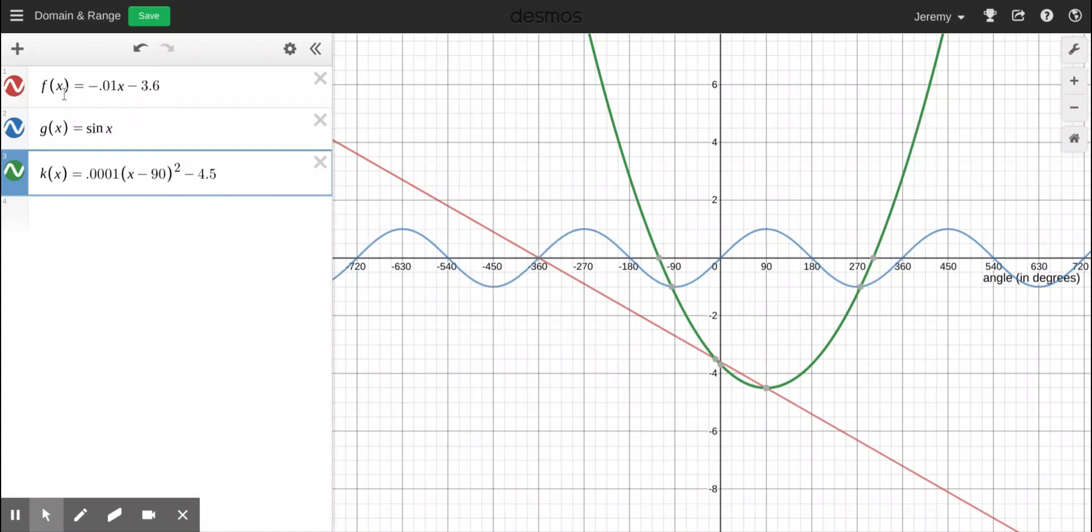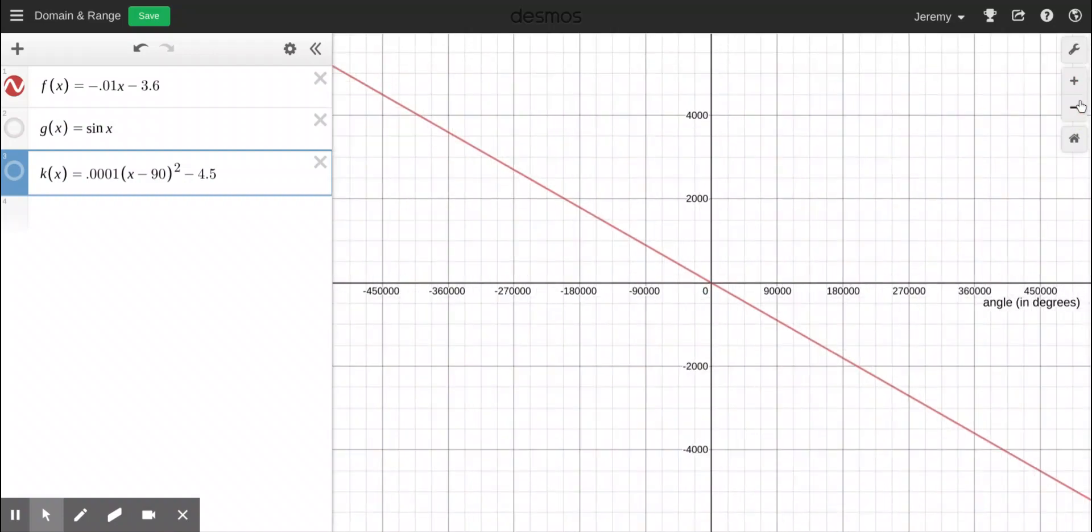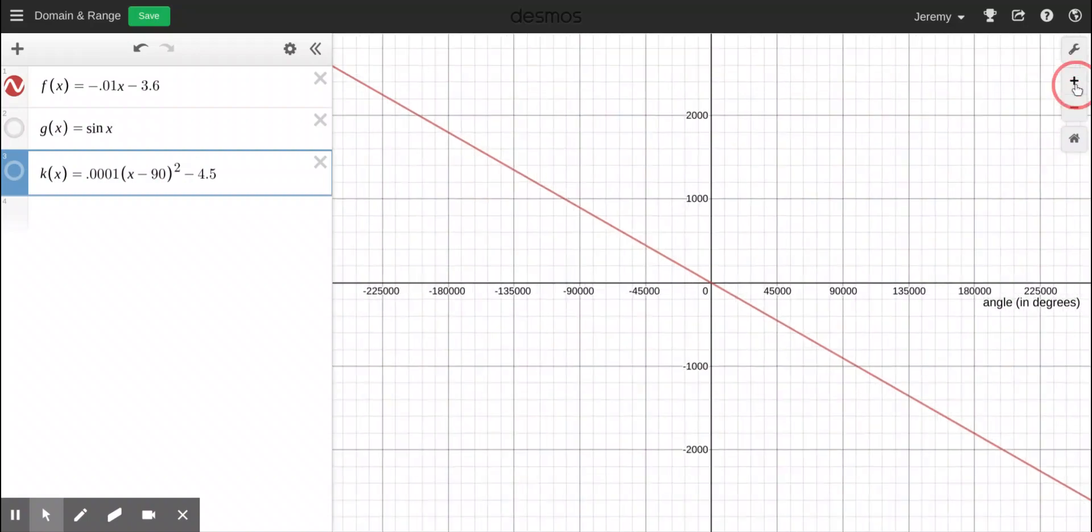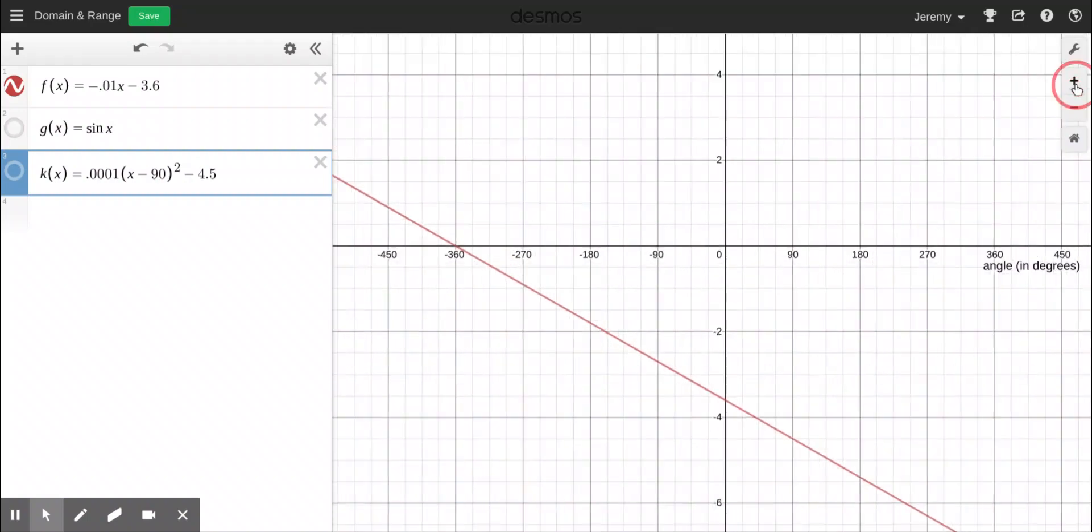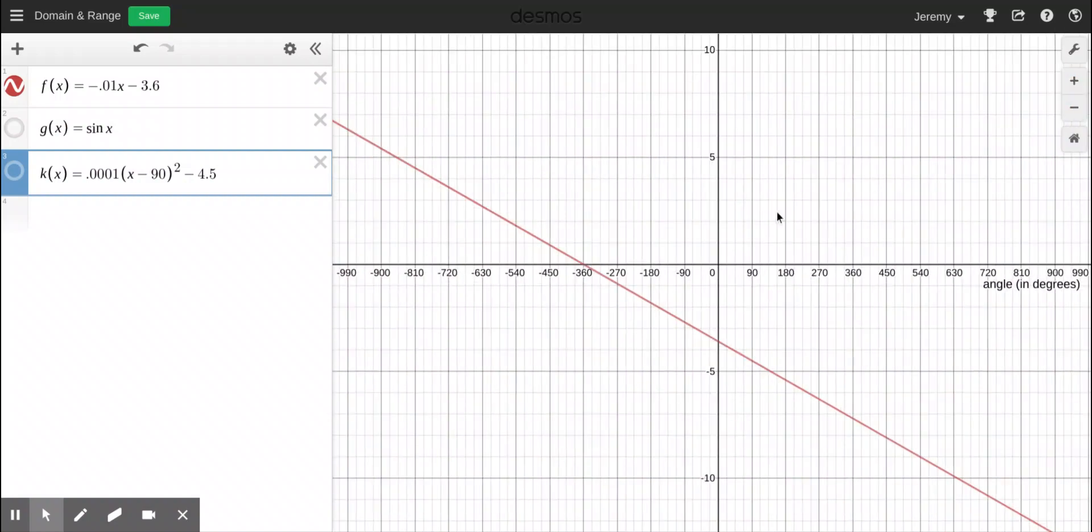So I'm going to start by just dealing with the linear function. Before I explain how to restrict the domain or range, I want to explain what they are. The domain is the set of all possible X values, and this linear function goes through all the X values. If you zoom out, no matter how far you zoom out, it's going through all of them. It's going all the way to the left and all the way to the right. So a mathematician would say that its domain is all real numbers. And we would say that its range is also all real numbers because it's going infinitely up and infinitely down.